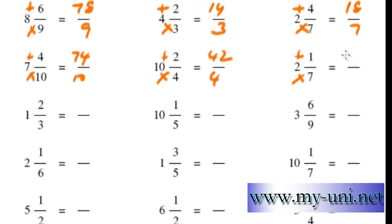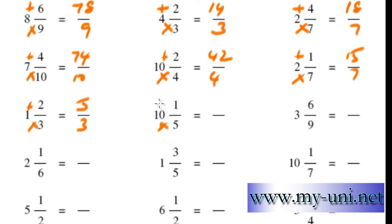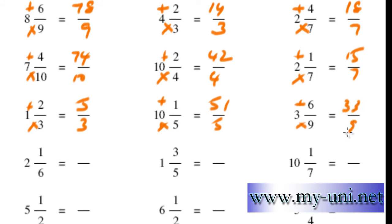14 plus 1 is 15 over 7. 3 times 1 is 3, plus 2 is 5 over 3. 10 times 5 is 50. 50 plus 1 is 51 over 5. 3 times 9 is 27. 27 plus 6 is 33 over 9.